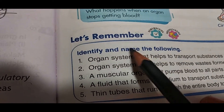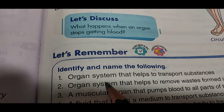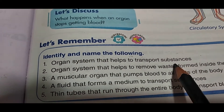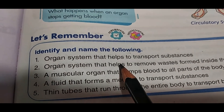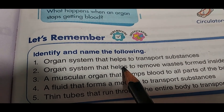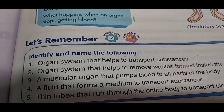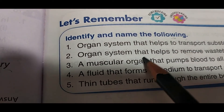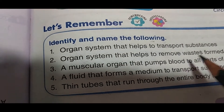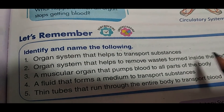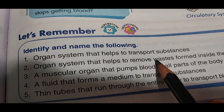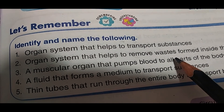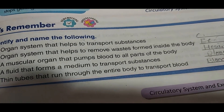Now let's remember. Identify and name the following: the organ system that helps to transport substances, and the organ system that helps to remove waste from inside the body. The answer is the excretory system.